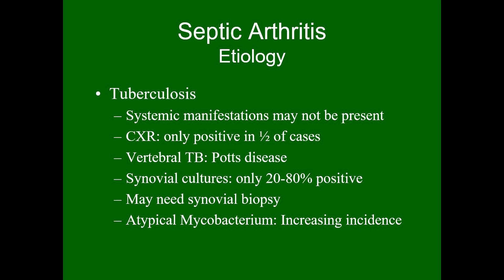Tuberculous arthritis is not common, but diagnosis can be very difficult. Systemic manifestations may or may not be present, and chest x-ray is only positive in about half the cases. Vertebral tuberculosis, or Pott's disease, accounts for about half of skeletal involvement with tuberculosis. Synovial fluid analysis yields positive smears or cultures in only 20 to 80% of cases, and a synovial biopsy may be needed. Atypical mycobacteria also need to be considered given the increased incidence of immunosuppression from diseases such as HIV or from the many immune-suppressing medications used to treat autoimmune disease.